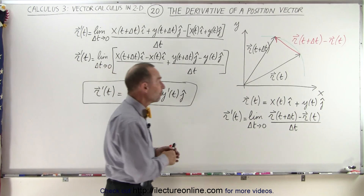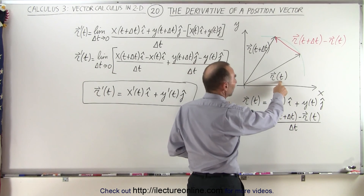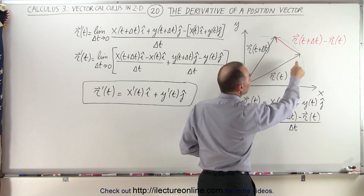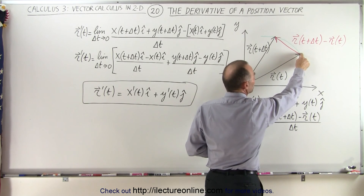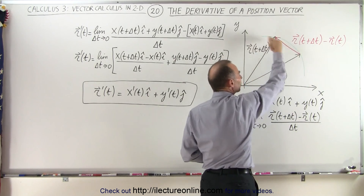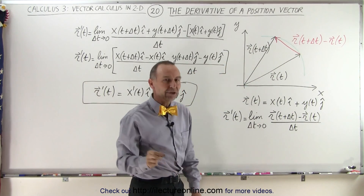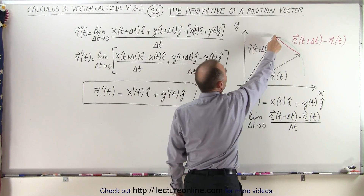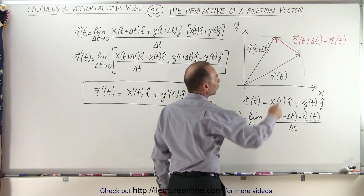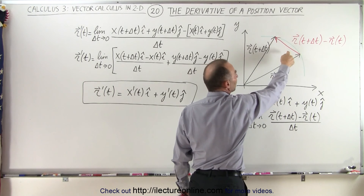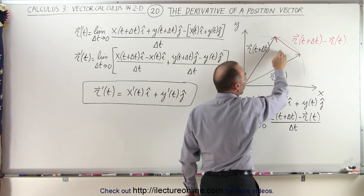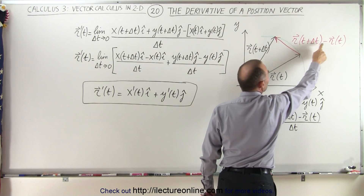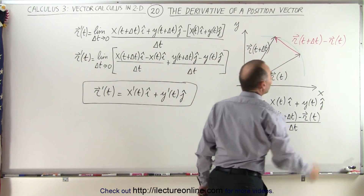Let's say we have a position vector r that depends on the parametric variable t. When t has a certain value, the position of the particle you're keeping track of is right there on the path along which that particle will travel. And at a small time later — a small delta t later — the position of the particle will be over there. The red vector here simply defines the difference of where the particle will be after delta t and where the particle was at time t.